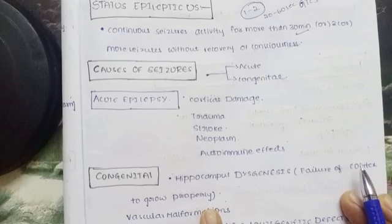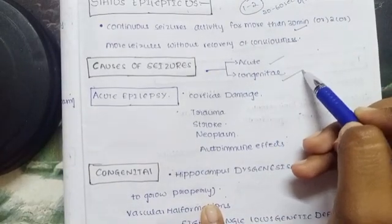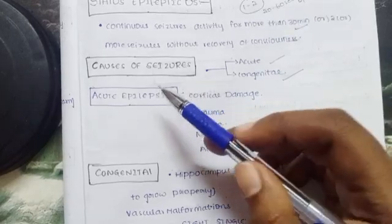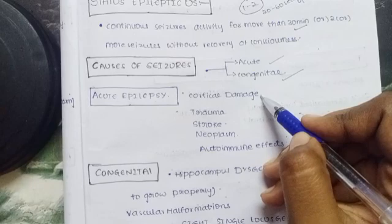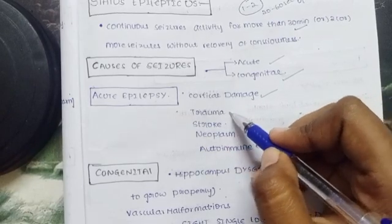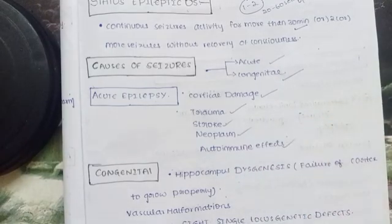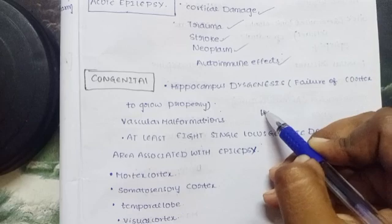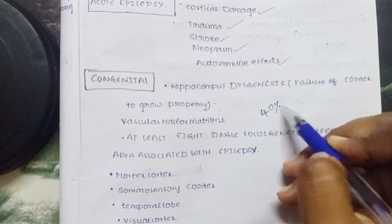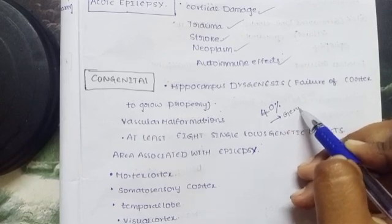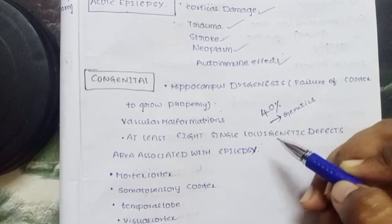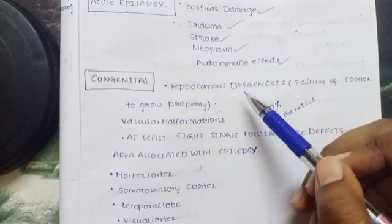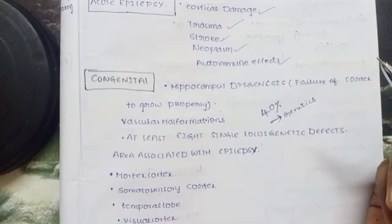Seizures are classified as acute or congenital, and also as provoked and unprovoked. Cortical damage causes acute epilepsy — including trauma, stroke, neoplasm, and autoimmune effects. Cancer patients and those with sinusitis can also develop seizure symptoms.